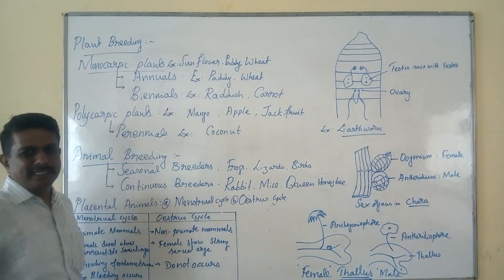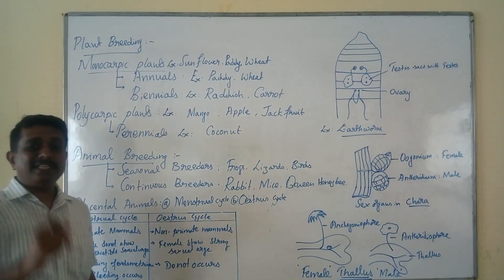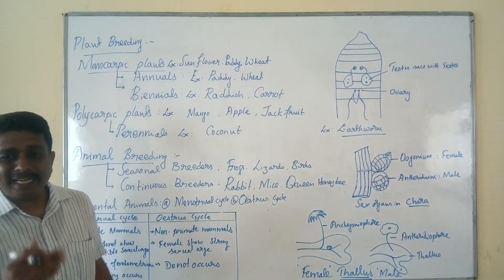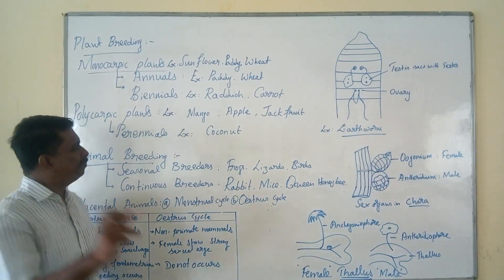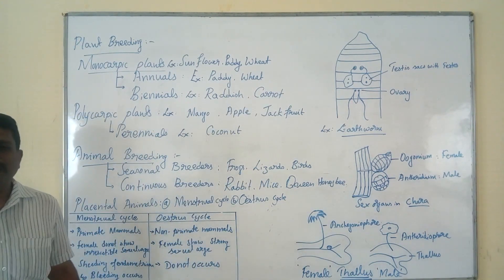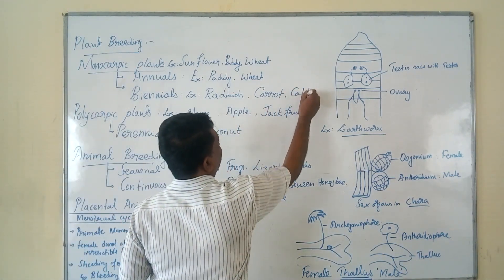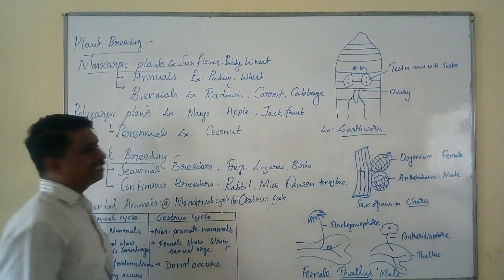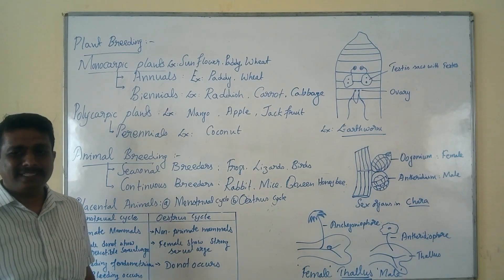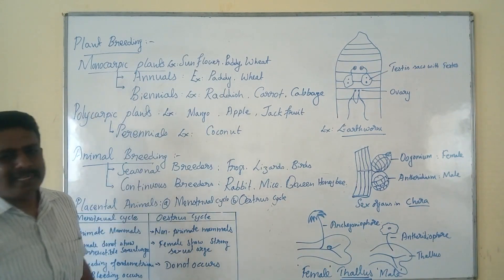The second type is biennials. Some classical examples for biennials are radish and carrot. These are plants that complete their life cycle twice in a year. Such plants are popularly designated as biennials. Two classical examples are carrot and cabbage.